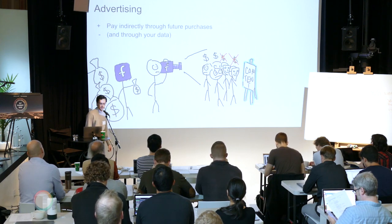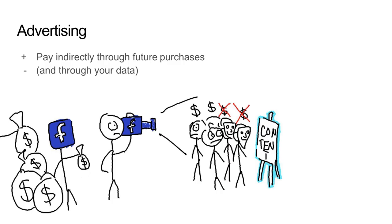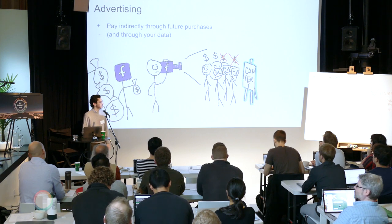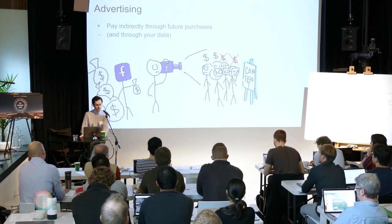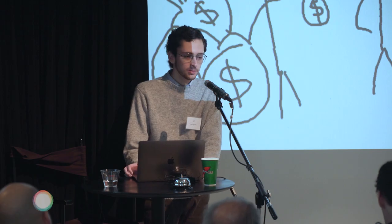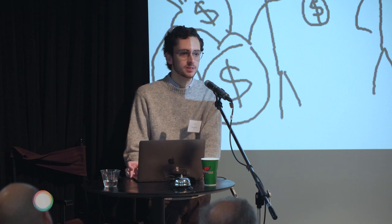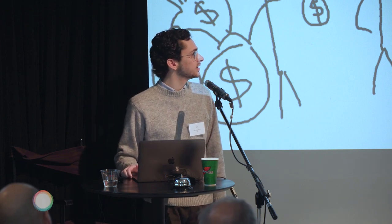Today the situation is pretty bleak. This person is trying to sell his painting for $50 because that's the only transaction size that really makes sense for a card payment. The next possible situation is advertising, which has its benefits. It basically allows you to pay indirectly through your future purchases. The advertiser pays the creator, then a different user goes to see that ad and pays the advertiser, completing the cycle. The problem is that the advertiser obviously wants to save costs and make their money go as far as possible.